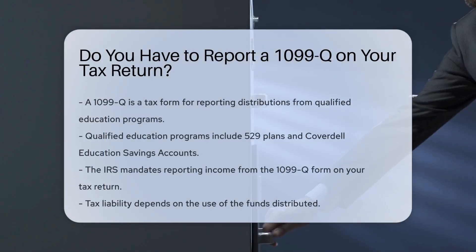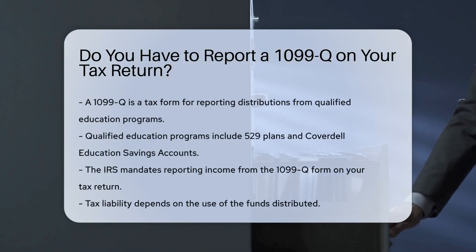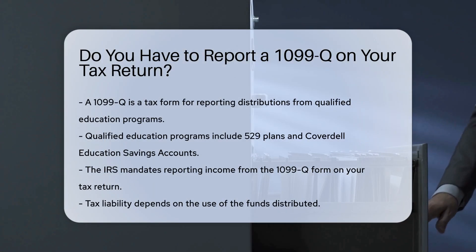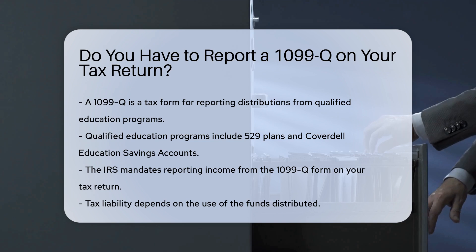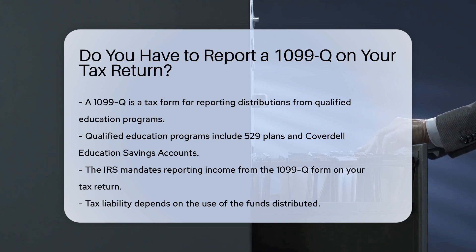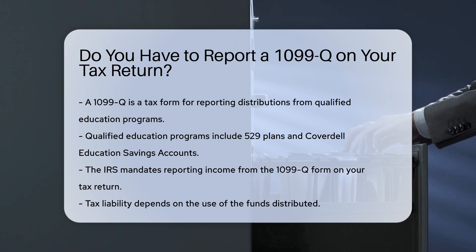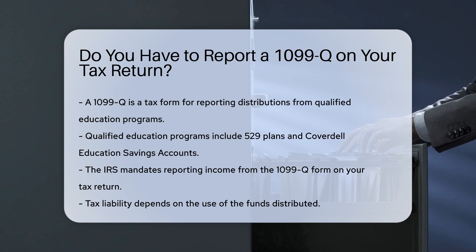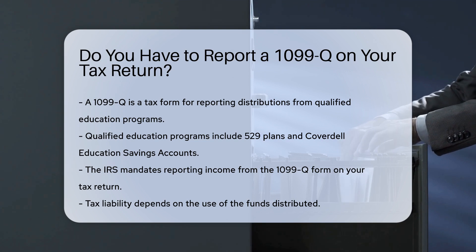A 1099-Q is a tax form used to report distributions from qualified education programs. These programs include 529 plans and Coverdell Education Savings Accounts.